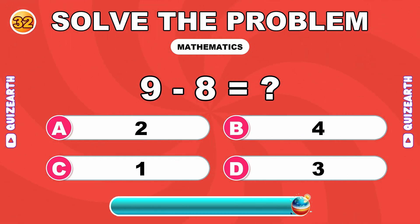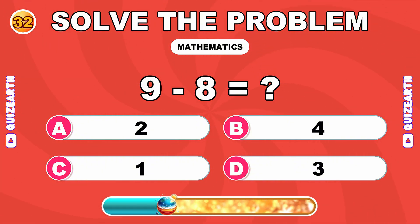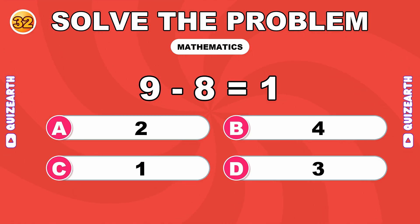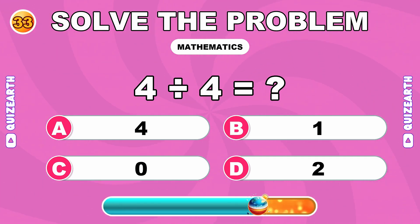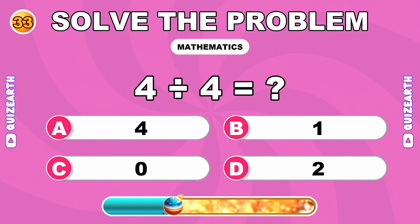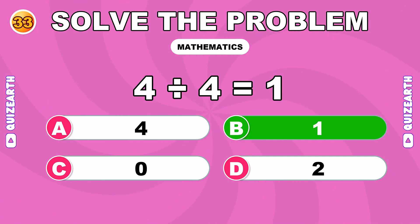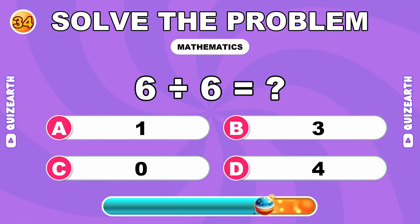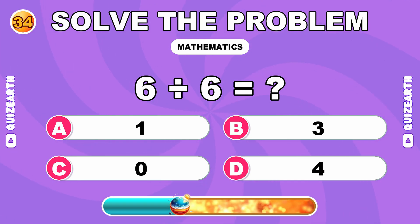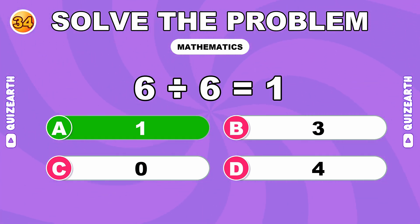How much is 9 minus 8? Killing it. The answer is 1. What do you get when you divide 4 by 4? Legendary speed. The answer is 1. What is 6 divided by 6? Absolutely crushing. The answer is 1.